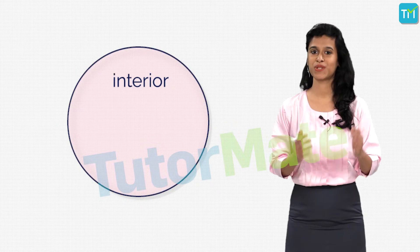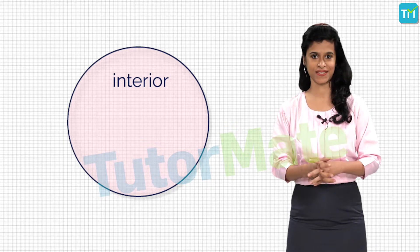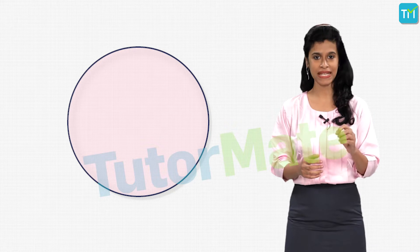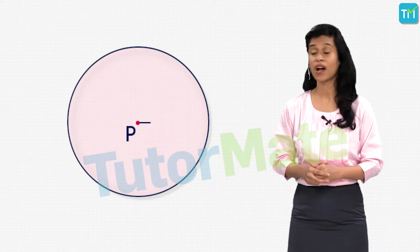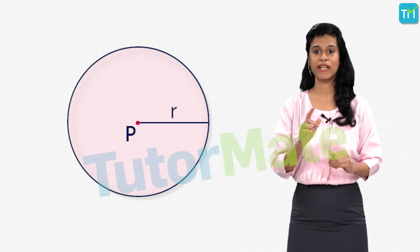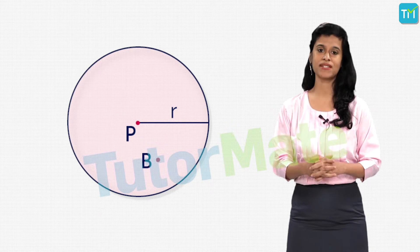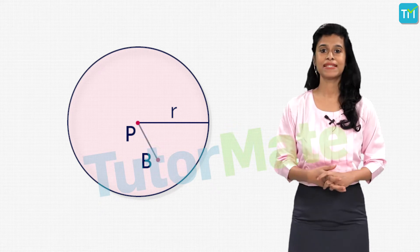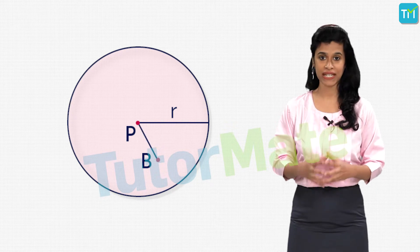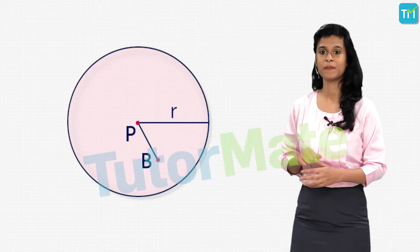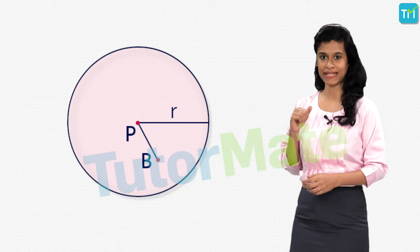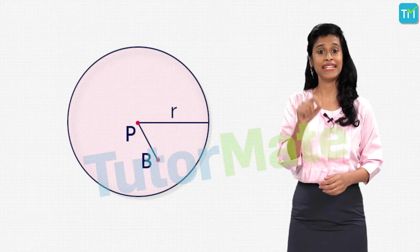So let's say we have a circle here whose center is at P and the radius is equal to r. Then we'll take B as any point on the plane where the circle lies. Now if the distance PB is less than the length of the radius, that is r, then B will lie inside the circle. That is, B will be a point in the interior of the circle.